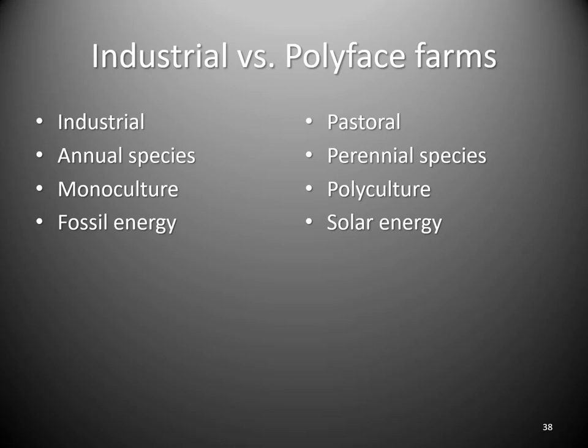Industrial ag uses fossil fuel energy — lots of non-human energy inputs to keep plants growing on continually depleted soil. It's polluting, wasteful, and doesn't seem to be sustainable in the long run. In contrast, Polyface Farms and pastoral systems use solar energy, which is renewable. The main difference is that the scale of production may not be as large, since you don't have the same vast stored energy source that fossil fuels represent.